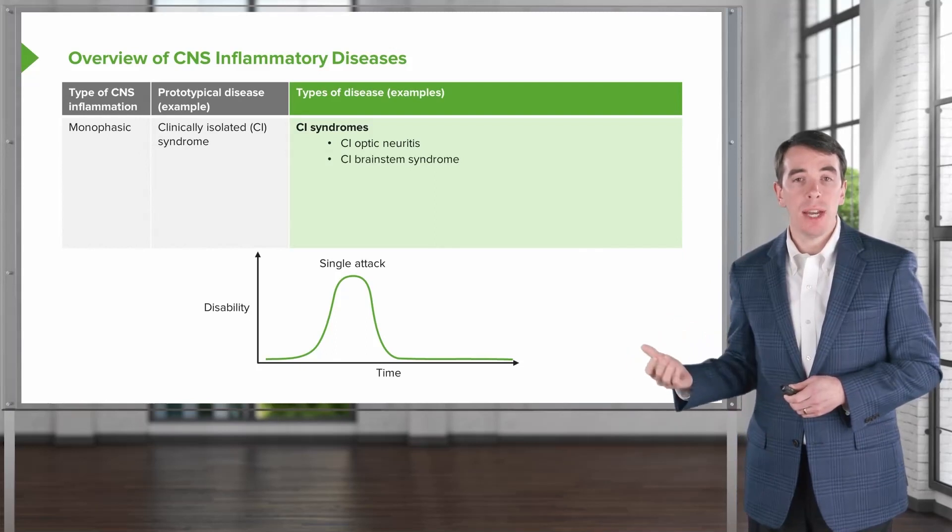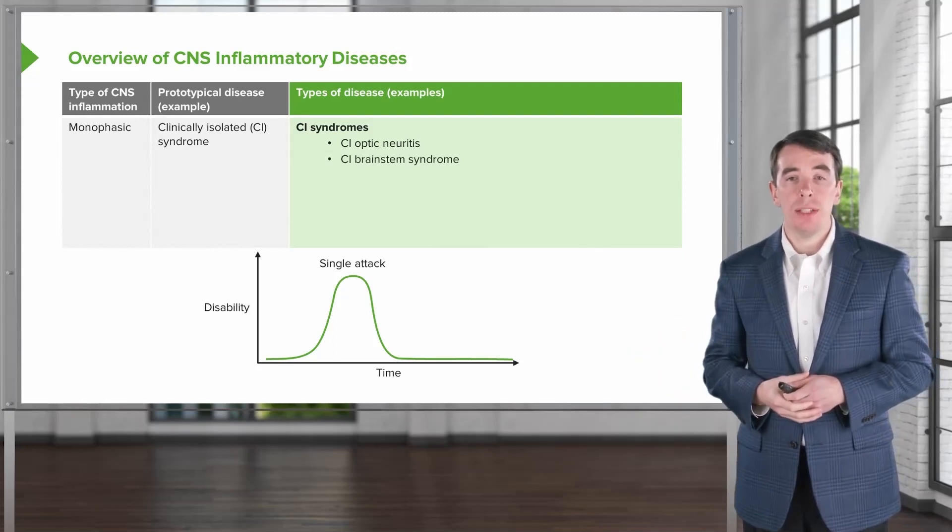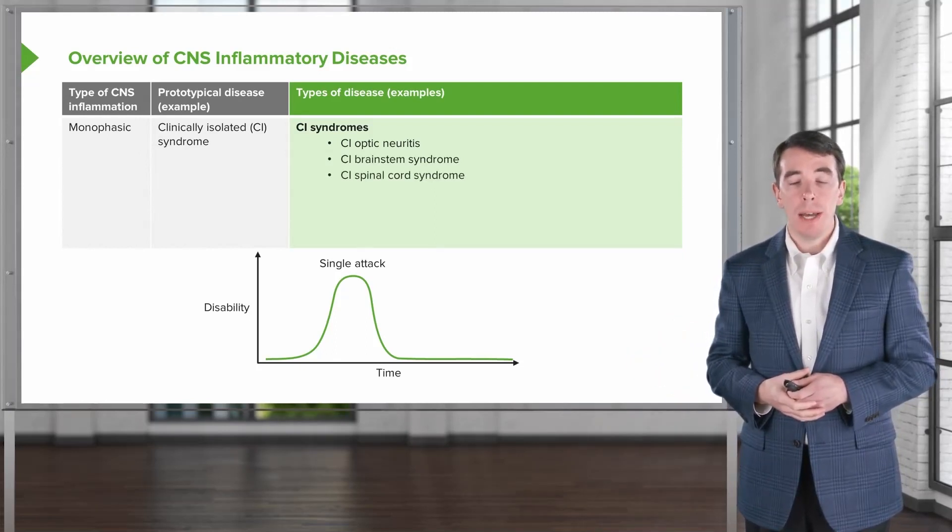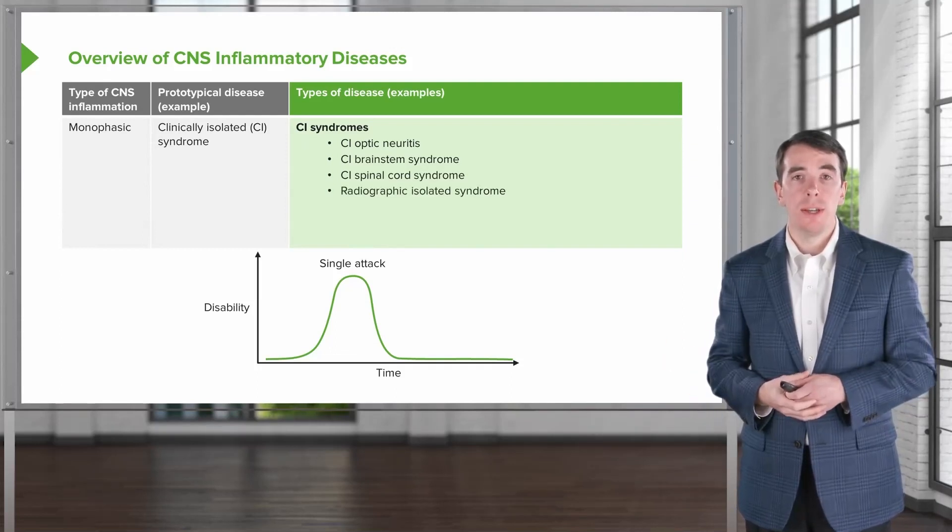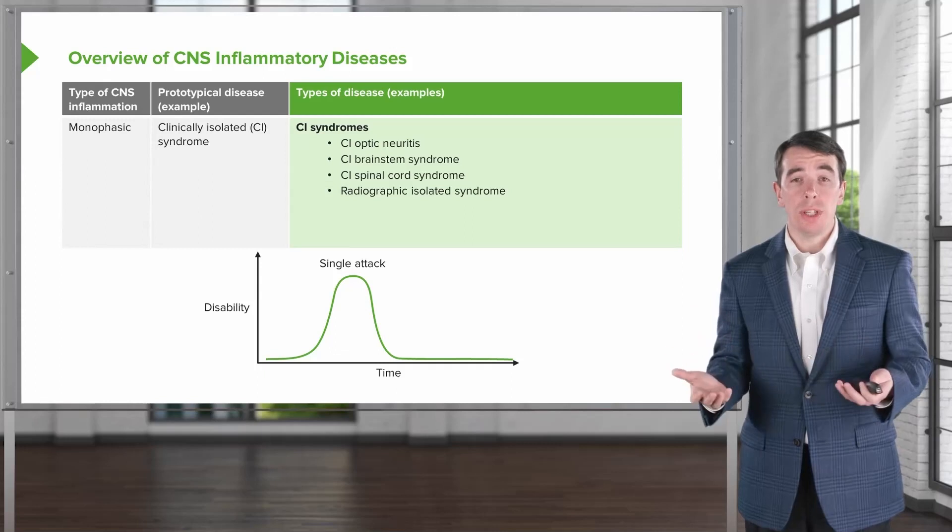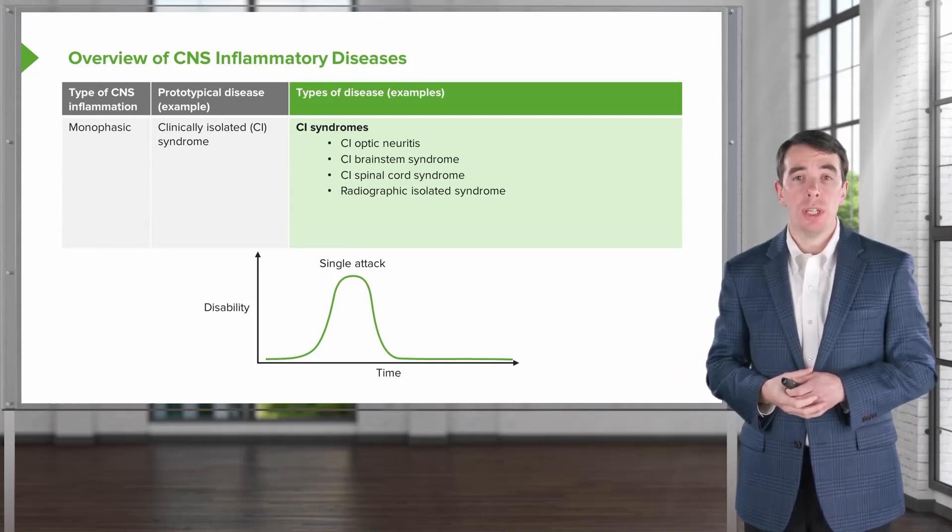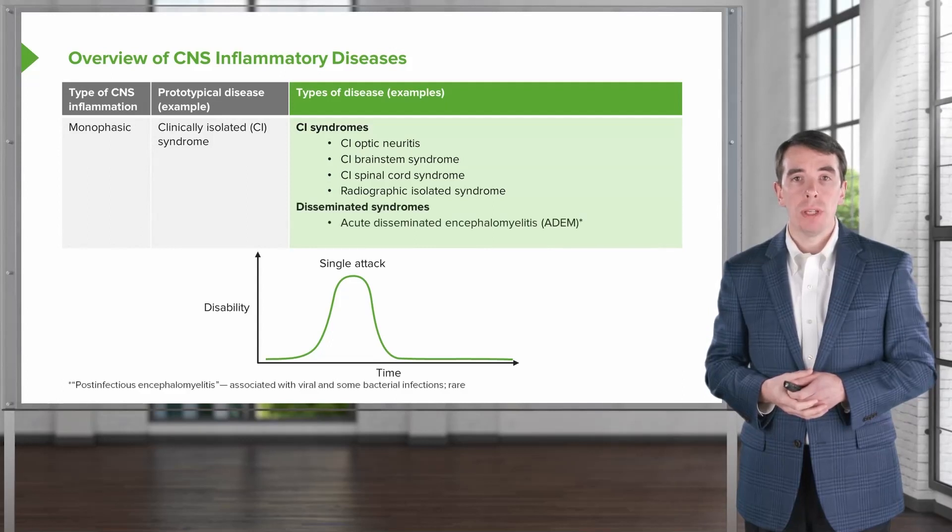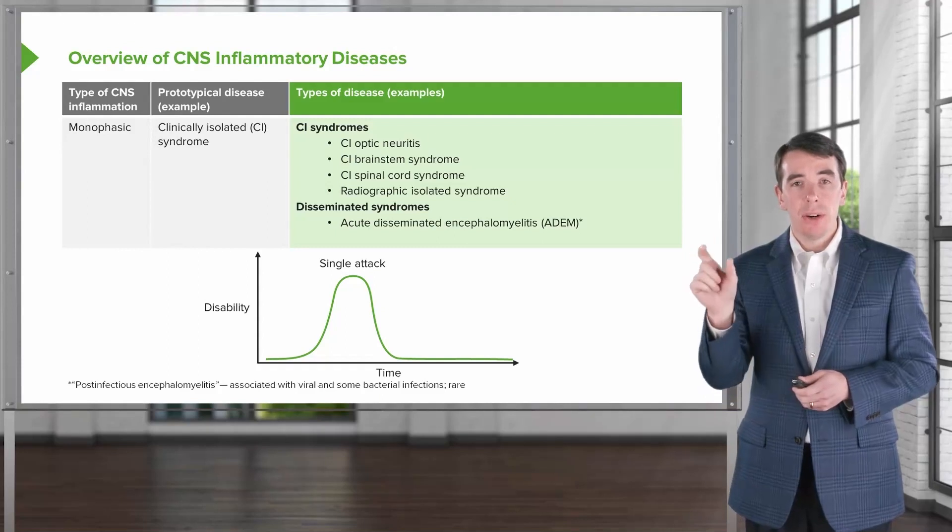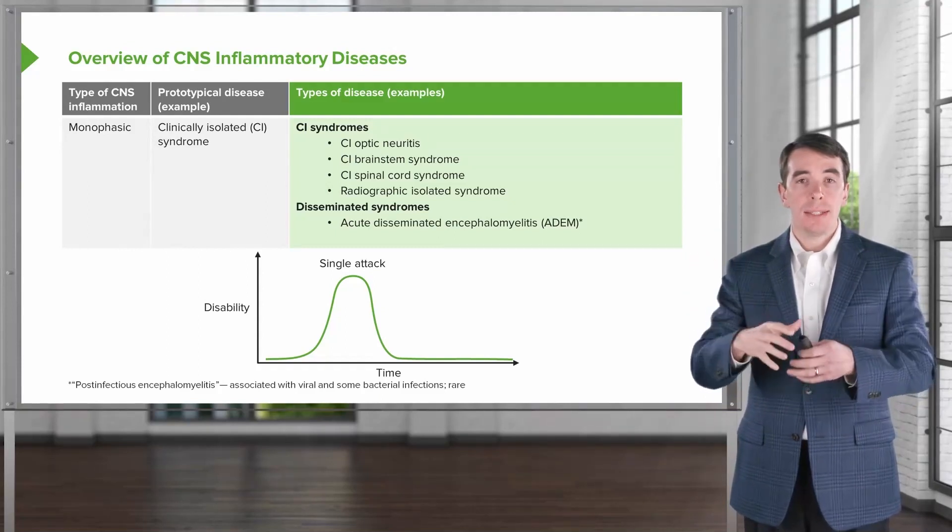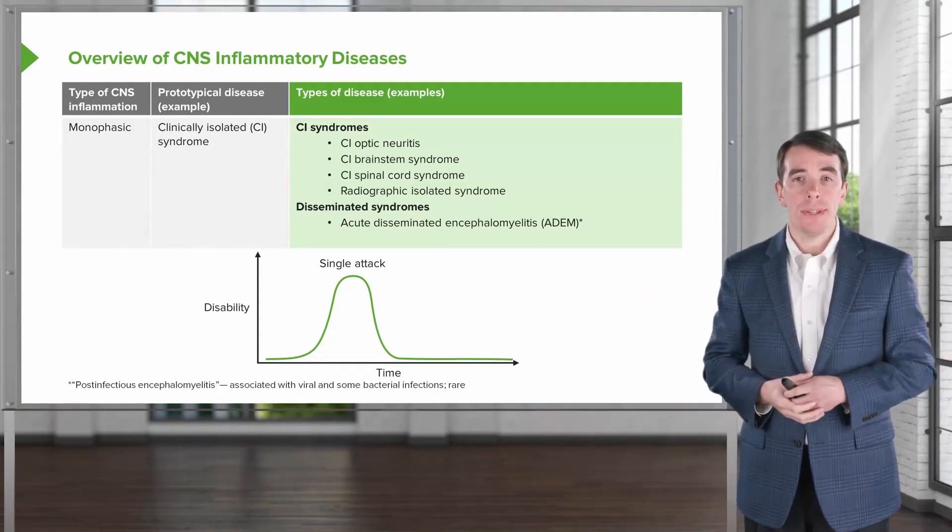When the brainstem is affected, it is a clinically isolated brainstem syndrome. When the spinal cord is affected, it's a clinically isolated transverse myelitis. Those are the clinically isolated syndromes where there is a single area of brain that is involved and not a diffuse or multifocal area that's involved.